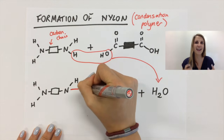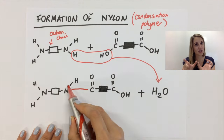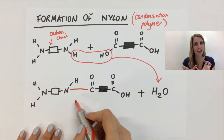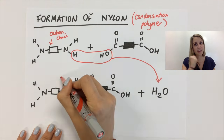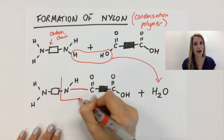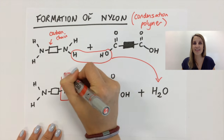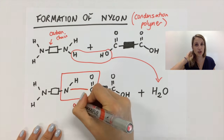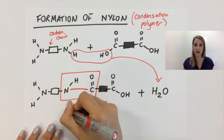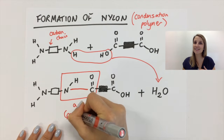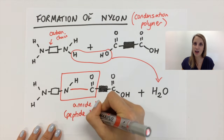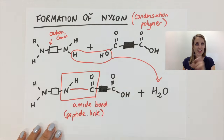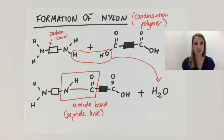This is the linkage that links these two monomers together. I can connect them with a bond, and that bond is called an amide bond, which is otherwise known as a peptide link. This is the same thing that joins together amino acids to build up proteins.